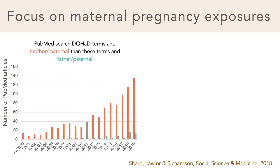But research on the developmental origins of health and disease, or DOHAD, has overwhelmingly focused on the effects of maternal exposures around the time of pregnancy. This is an updated version of a graphic co-authored by Deborah Lawler and Sarah Richardson, published in 2018. It shows the number of PubMed articles published each year since 2000 when searching DOHAD terms — things like developmental origins, fetal origins, Barker hypothesis — combined with either mother or maternal in peach, or father or paternal in green.